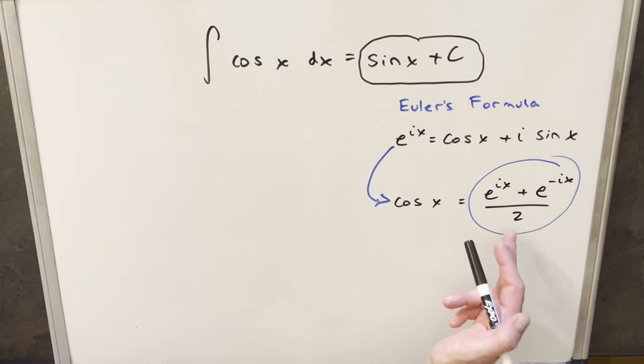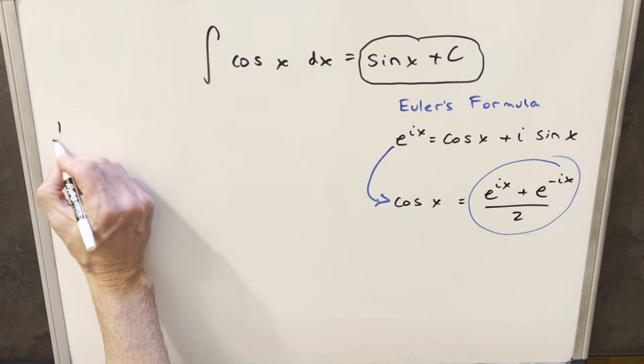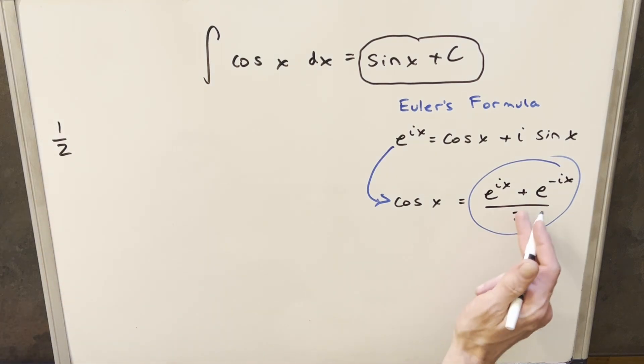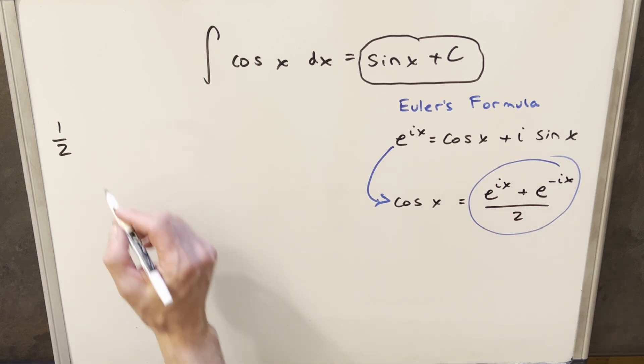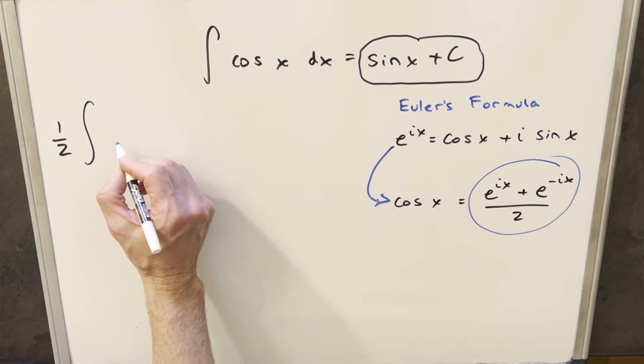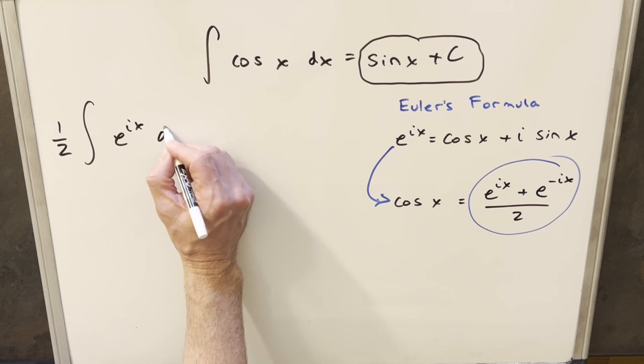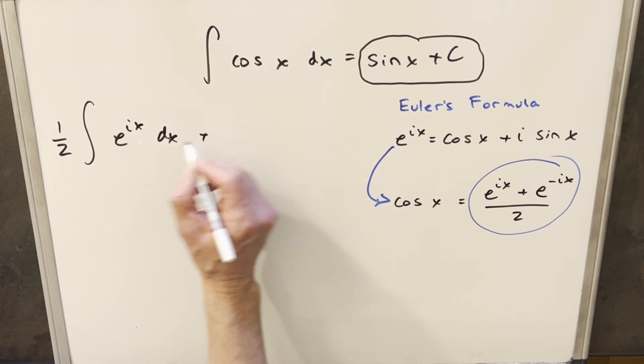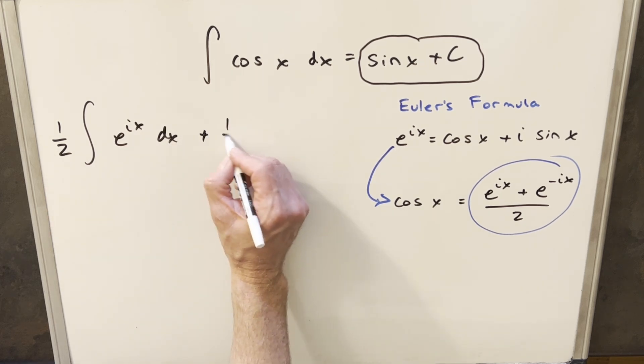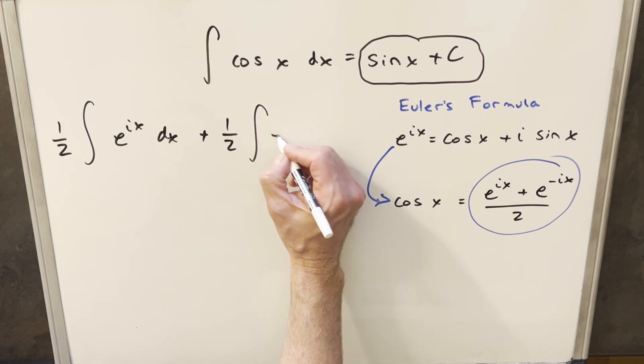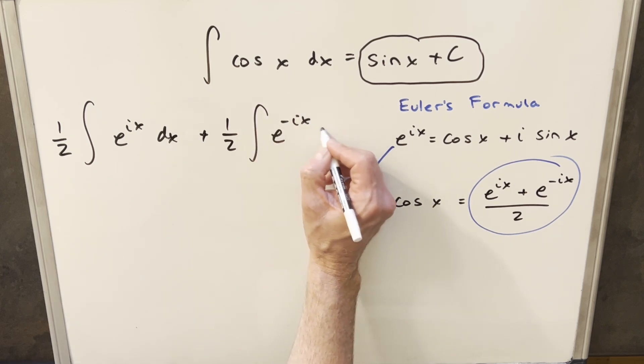So when I plug this in, what I'm going to do actually first is we have a constant value, we've got this two. So I'm going to factor a one half in front. And because we're adding, I can split this into two integrals. So I can write it as half e^(ix) dx. And then the second one I'll distribute in the one half. So for our second integral of one half integral of e^(-ix) dx.